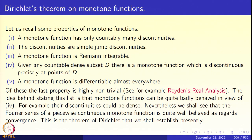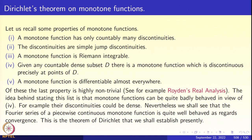We will discuss the other properties briefly. Item number 4 says that monotone functions can behave pretty badly because they can be discontinuous at lots of places distributed densely. Nevertheless, we shall see that the Fourier series of a piecewise continuous monotone function is quite well behaved as regards convergence. This is the theorem of Dirichlet that we shall establish presently. So, a few properties of monotone functions.